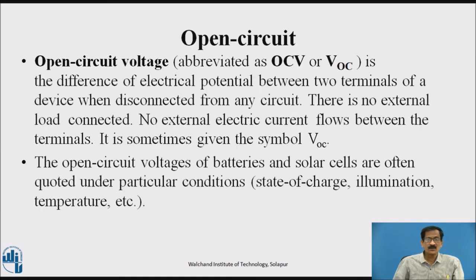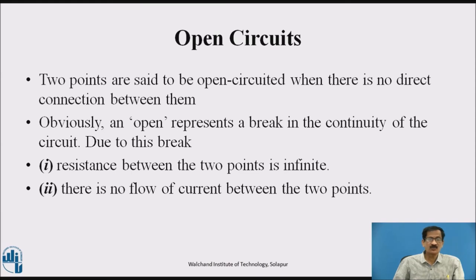Open Circuit: open-circuit voltage, abbreviated OCV or VOC, is the difference of electrical potential between two terminals of a device when disconnected from any circuit. There is no external load connected and no external electric current flows between the terminals; it is sometimes given the symbol VOC. The open-circuit voltages of batteries and solar cells are often quoted under particular conditions such as state of charge, illumination, and temperature. Two points are said to be open-circuited when there is no direct connection between them. An open represents a break in the continuity of the circuit; due to this break, the resistance between the two points is infinite and there is no flow of current between the two points.